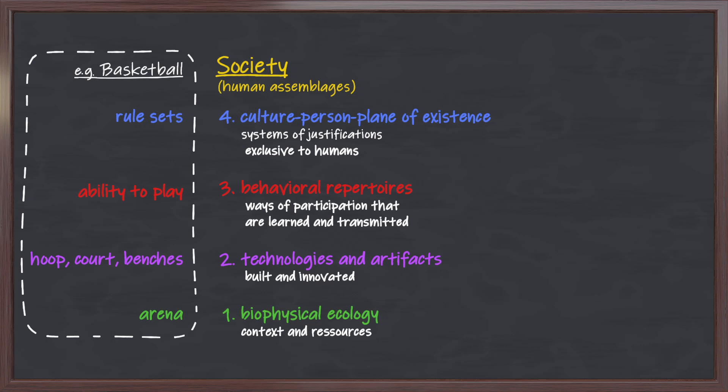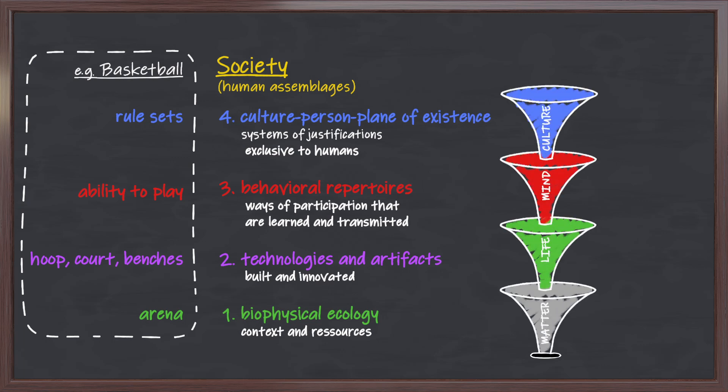Now, what we've achieved here in delineating these elements is as a function of the tree of knowledge. The tree of knowledge system enables us to see the frequencies of behavior patterns first in nature, separating them out from the technological world. That's why we were able to separate out technologies from the other domain. And then we can specify the biophysical ecology as the life and matter dimensions. Most importantly, in terms of the domains of confusion that people have gotten into, is the ability to separate out the mind-animal dimension and the behavioral investment patterns from the culture-person systems of justification.